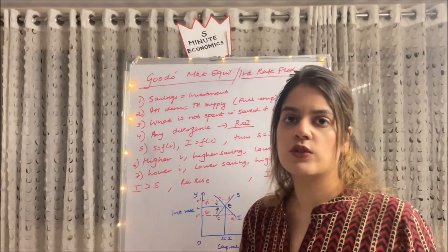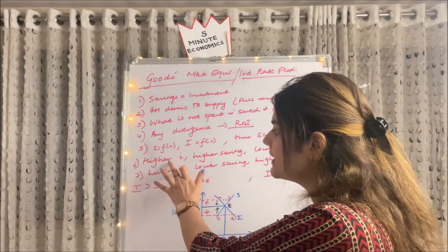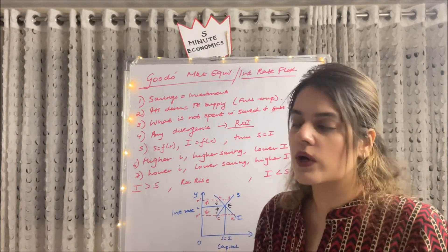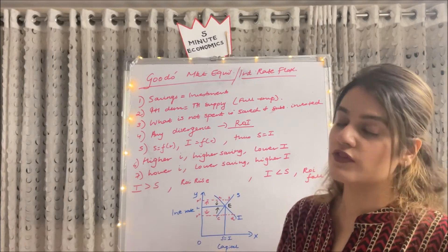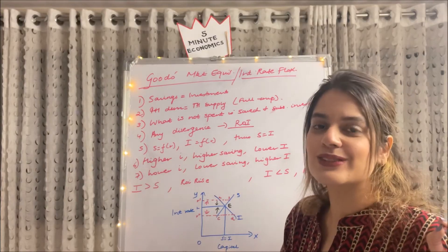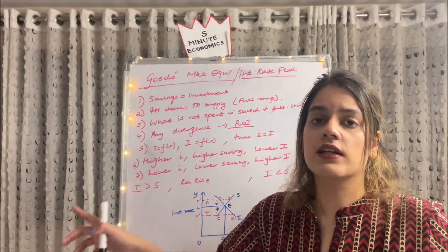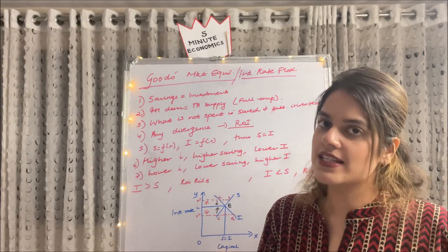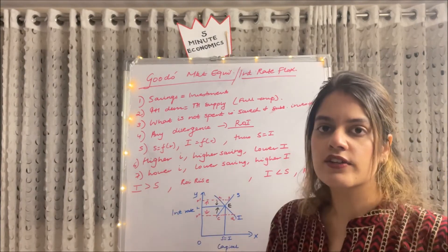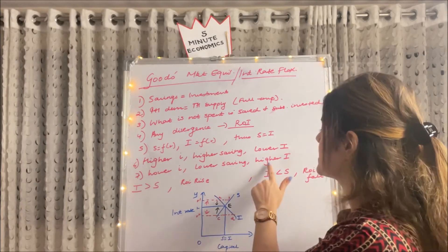Interest is a reward for saving — when we save, we receive interest. A higher rate of interest leads people to save more, which means lower investment. In economics, the rate of interest (small i) and investment (capital I) always move in inversely proportional directions: if one rises, the other falls. So a lower rate of interest leads to lower saving and higher investment, and vice versa.